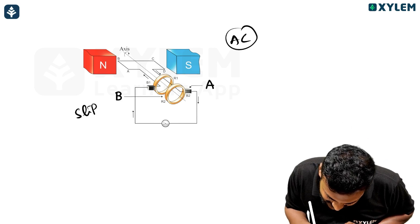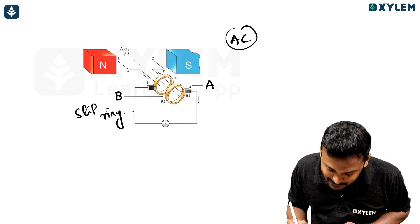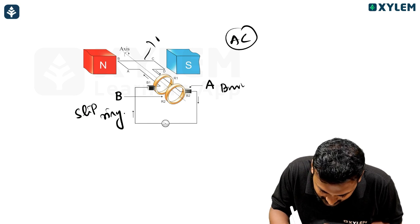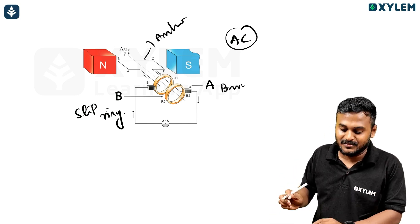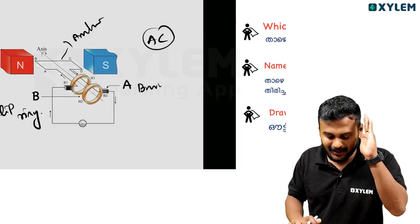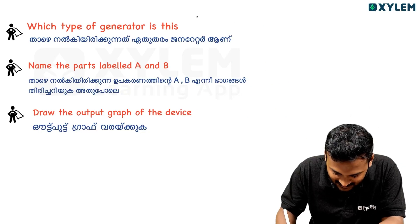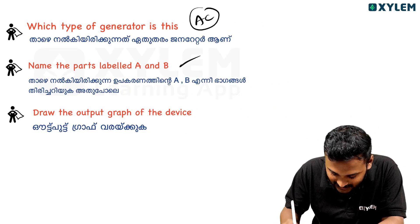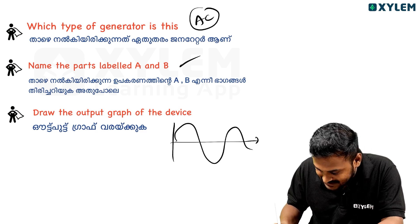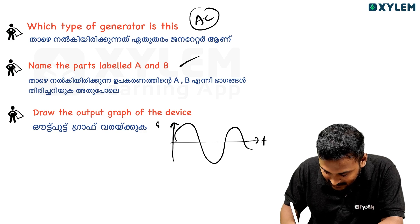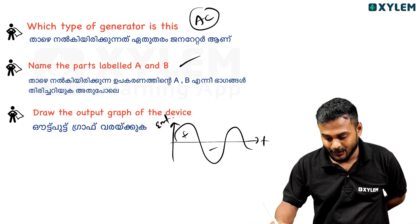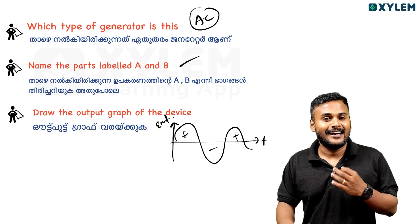This is the split ring. This is the brush. This is the armature. Identify the type of generator: AC. The parts are labeled. The AC output graph — X axis is time, Y axis is EMF. One half positive, one half negative, then positive again.